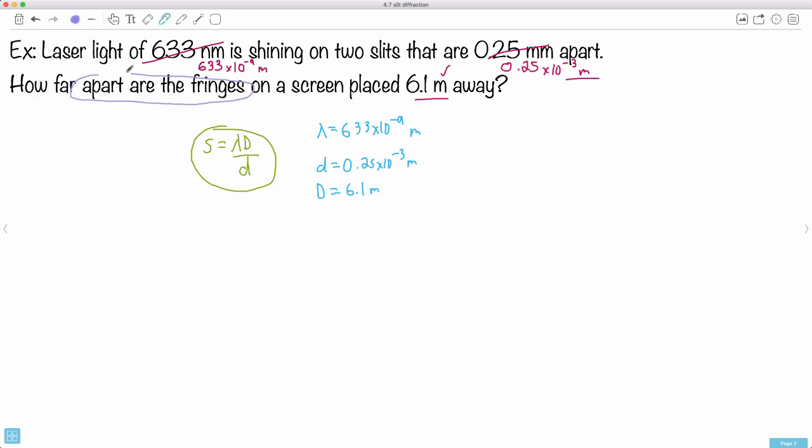I don't even have to rearrange this, this is so easy. I just put in s equals—I just put in all the numbers. So 633 times 10 to the minus 9, all that times 6.1, all that divided by d which is 0.25 times 10 to minus 3.